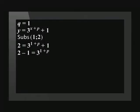To begin solving for p we substitute y with the value of 2 and x with 1. Simplified this gives us 1 equals 3 to the power of 1 plus p. To solve for p we need to have the same base. 1 can be rewritten as 3 to the power of 0.